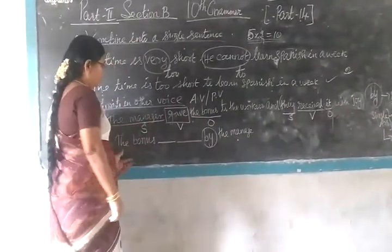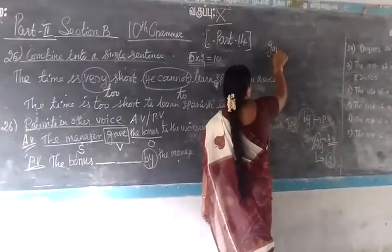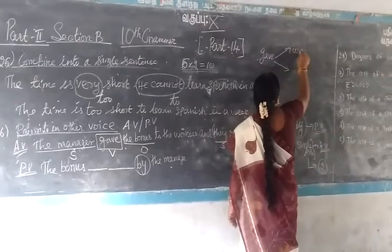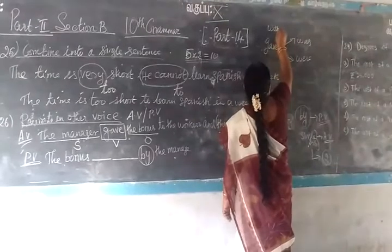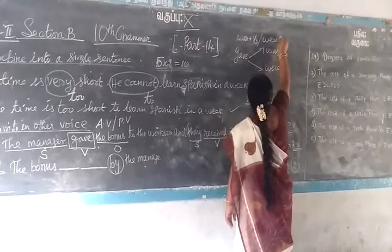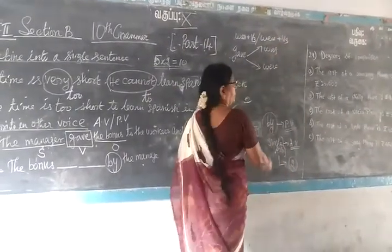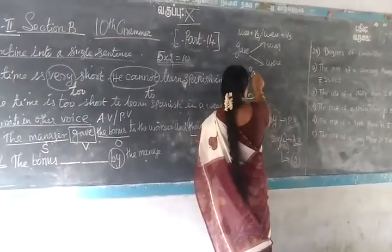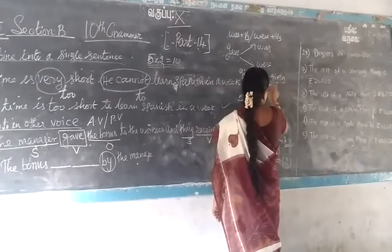So you make 'the bonus' the subject. The verb given is 'gave'. Since it is past tense, you use 'was' and the past participle. This is the rule. The structure is: was + V3 (past participle). Give, gave, given — 'given' is the past participle, also called V3.